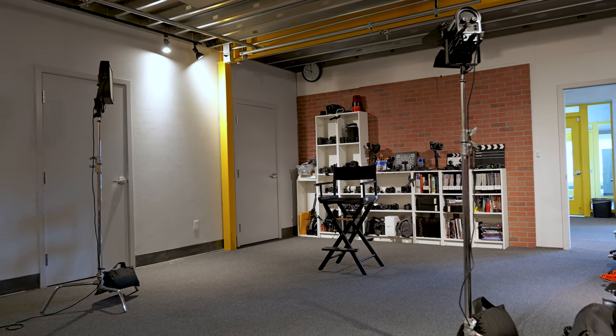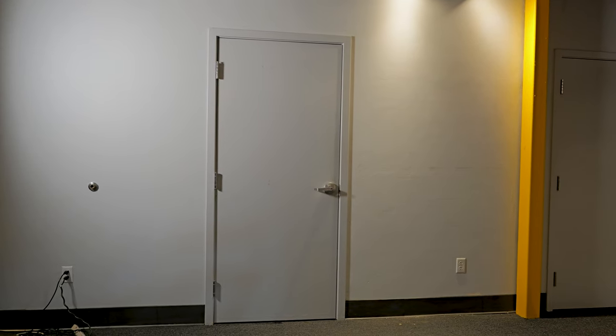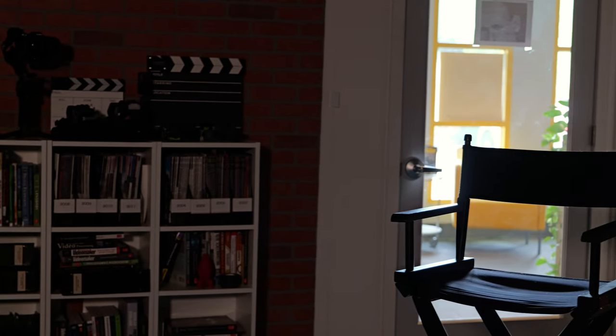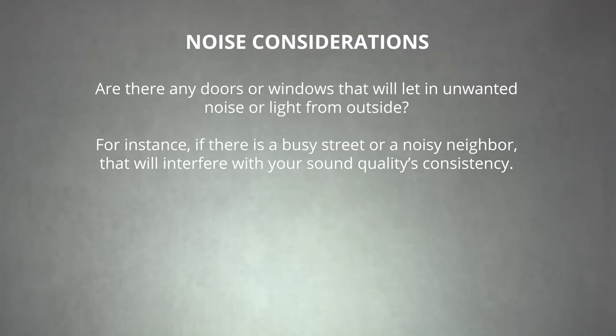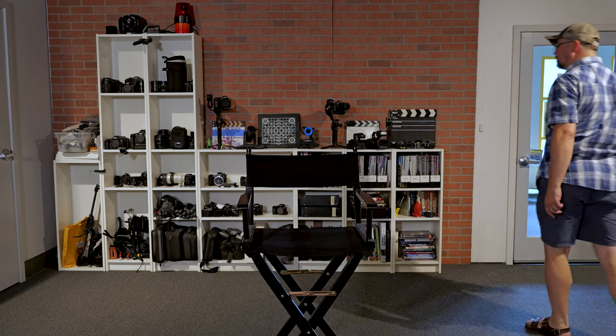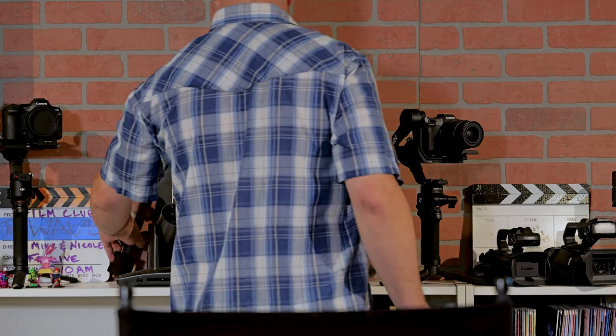You also need to think about your studio's layout. The layout will determine how you should arrange your setup. Ultimately, you want a layout that balances aesthetics and functionality. There are also practical aspects to pay attention to when designing your layout. For example, are there any directions that you can't shoot toward? It can be an issue if there's a window behind you that creates unwanted backlighting or glare. Are there any doors or windows that will let in unwanted noise or light from the outside? For instance, if there's a busy street or a noisy neighbor, that will consistently interfere with your sound quality. Where will your background be — a plain wall, a backdrop, a bookshelf, or something else? You want a background that's relevant to your content, but not so cluttered it's distracting. You also want some separation between your subject and your background, either by using a shallow depth of field or by placing some distance between them.